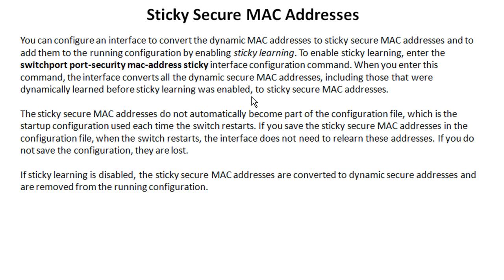When you enter the sticky command, the interface converts all dynamic secure MAC addresses to sticky addresses, including those that were dynamically learned before sticky learning was enabled. I'm guessing that means if you've already enabled port security with dynamic learning, and you've learned four MAC addresses on a port, enabling sticky will add those four to the running configuration. Conversely, once you disable sticky while port security is still enabled, it goes back to dynamic and converts those to dynamic secure addresses, removing them from the running configuration. We will see this on the CLI in the lab portion.